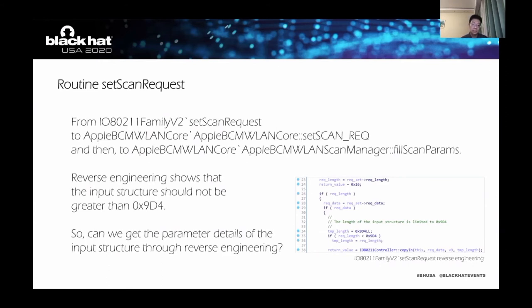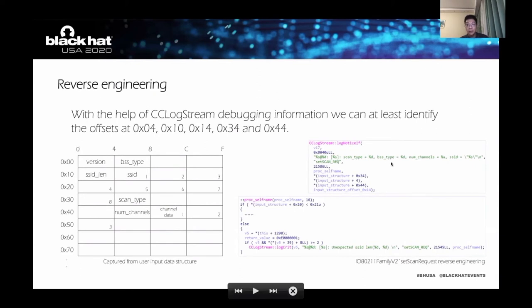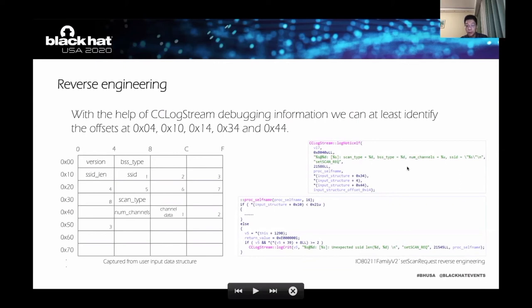To understand the root cause of the problem, we need to figure out the detail of the structure. One challenge I faced at the time was whether this input structure could be clarified through reverse engineering. I found a method — reverse engineering is feasible. I found debugging information in the routing set scan request, in which a large number of readable strings were submitted to the function CC log string. For example, on the right side, we can see that offset 0x34 of the input structure should be a member called scan type, and offset 0x44 should be a member called number of channels. So we can make a table.